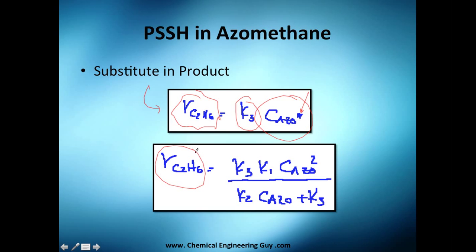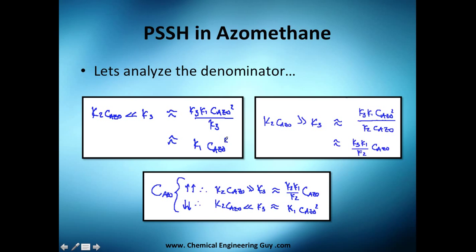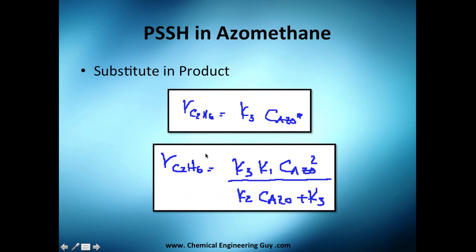Going back to the product rate expression, the rate of formation depends on the rate constant times the concentration of the excited state. We now have the expression for [ASO*] from the PSSH result, so we substitute that expression in here to get our final rate equation.